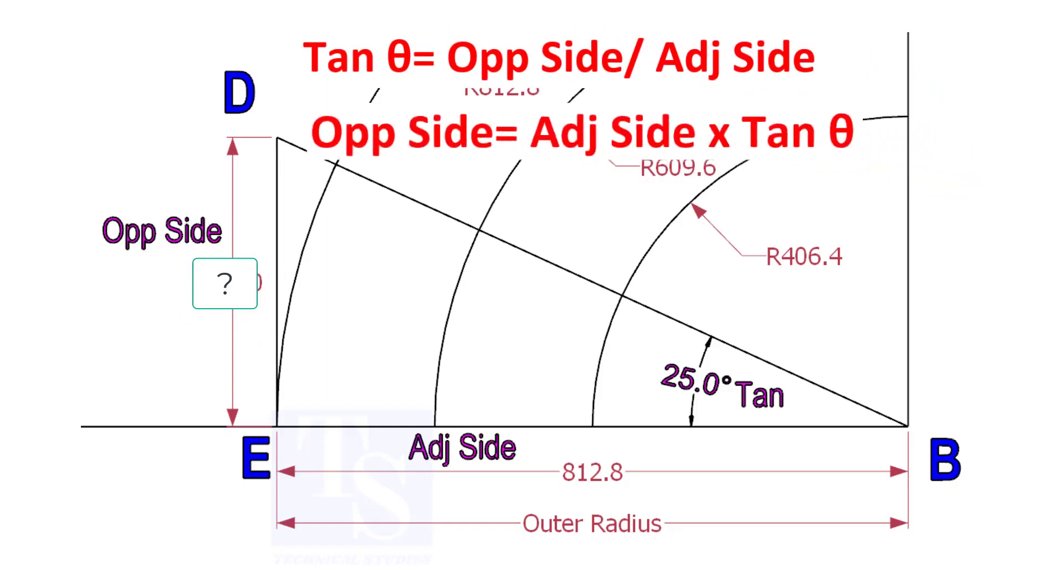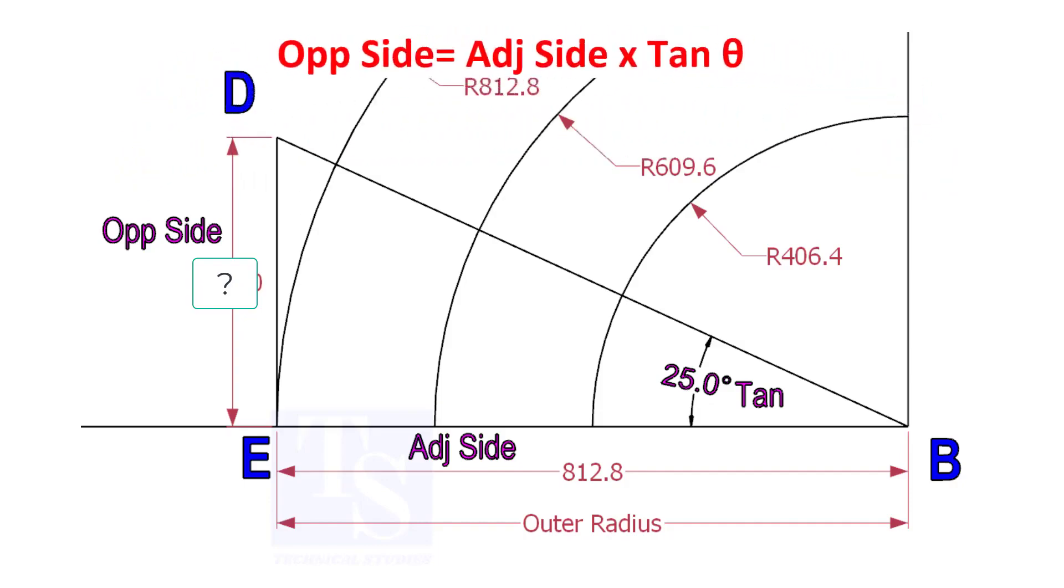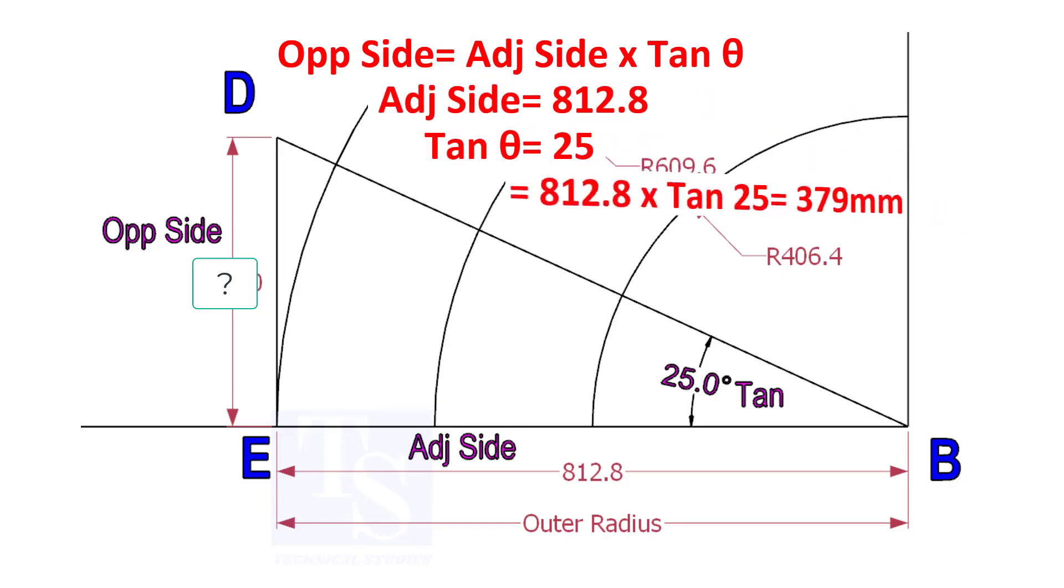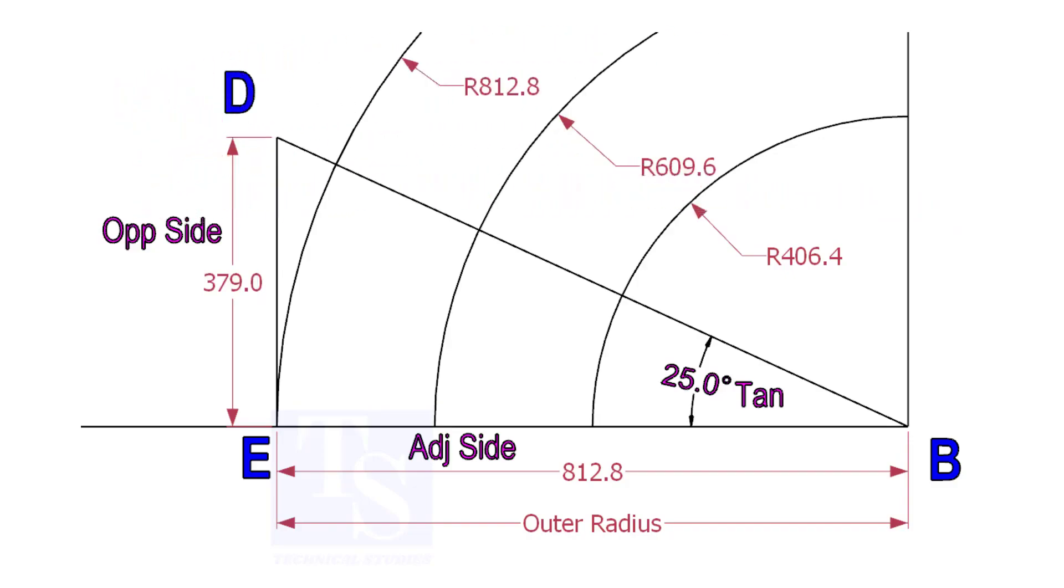Opposite side equals adjacent side multiplied by tan-theta. 812.8 into tan-25 equals 379 millimeters. Draw the line ED vertically and the slant line DB.